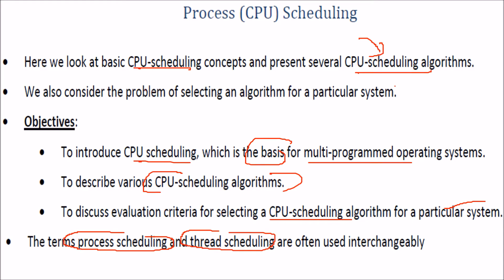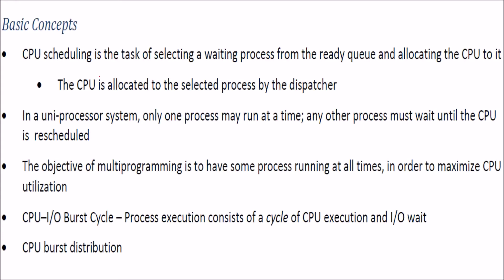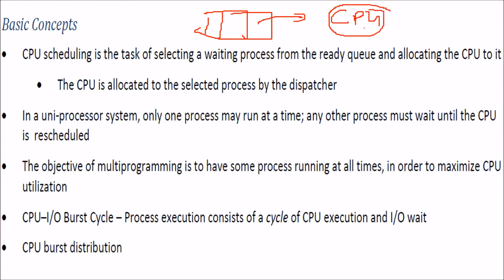The terms CPU scheduling, process scheduling, and thread scheduling are often used interchangeably in papers, books, and internet material. The basic concept is that we want the CPU to be busy always — if some processes are waiting, we want to assign them to the CPU so that CPU utilization increases and multi-programming can be maximized.